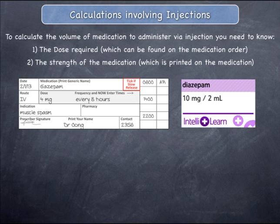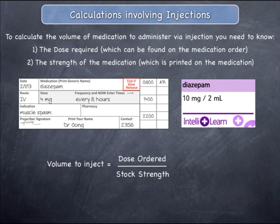Once you have this information, you can calculate the volume to administer, which is equal to the dose that has been ordered, divided by the stock strength, multiplied by the volume over one.